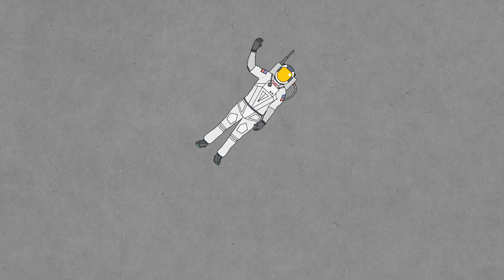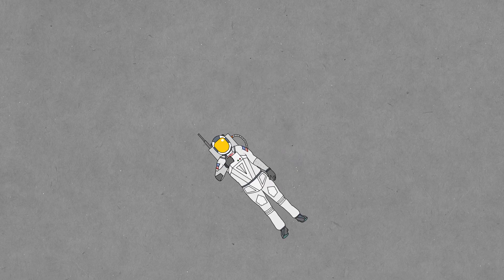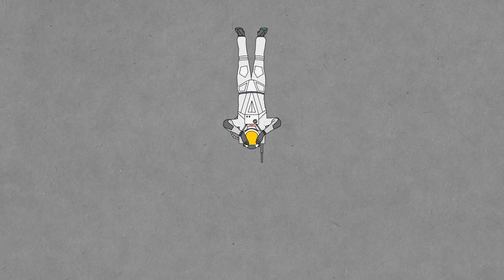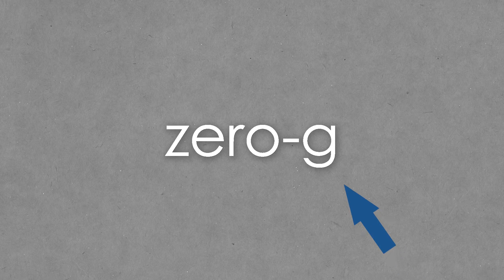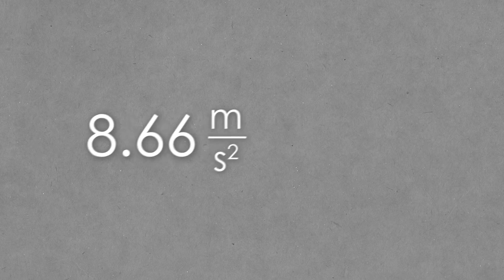There are some other names for this phenomenon, including zero-g and microgravity, both of which are also technically incorrect. Zero-g suggests that g, the gravitational acceleration, is zero. But on the ISS, it's actually about 8.66 meters per second squared, which is decidedly non-zero.